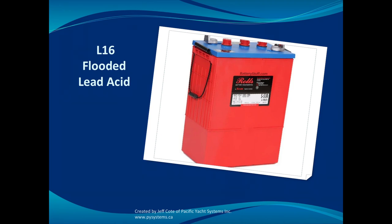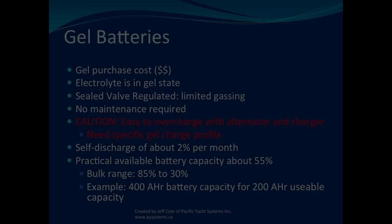Here is an image of a flooded lead acid battery. You can see there are three cells — three posts that you can actually top off. Each cell is about 2.2 volts, and that's how you get a six volt battery.